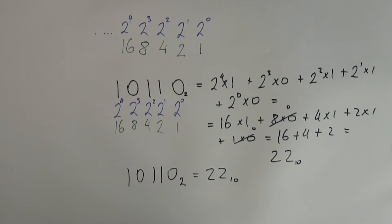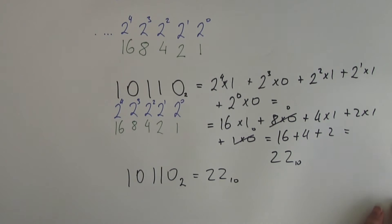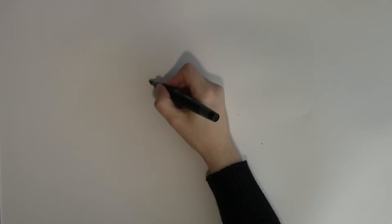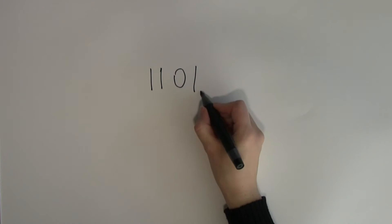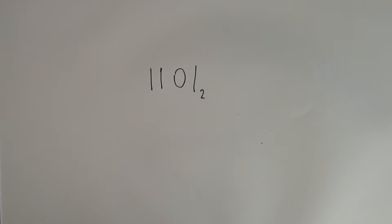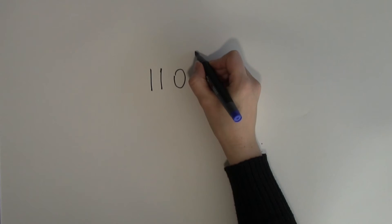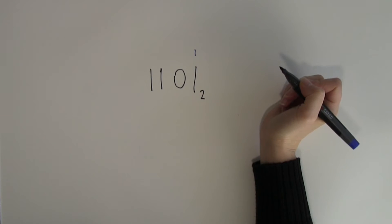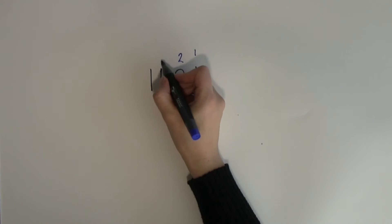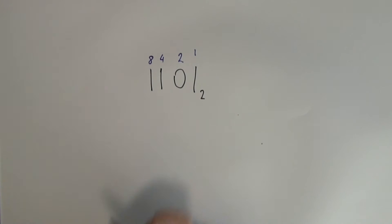Let's have a look at another example so you can see clearly how binary numbers work. Let's start with a slightly smaller number: 1101. We can again use place values, but there is a slightly faster way. You might have noticed that place values all doubled as we went from right to left. So I can start by writing 1 on top of the first place value, then double to get 2, then 4, then 8.